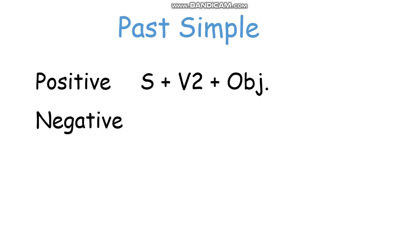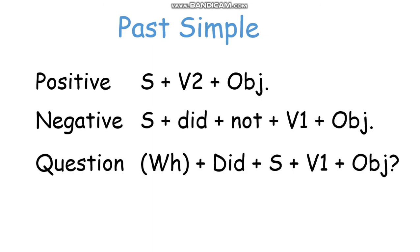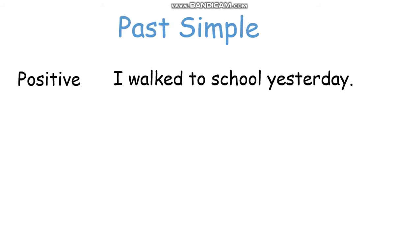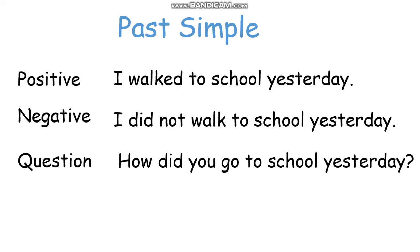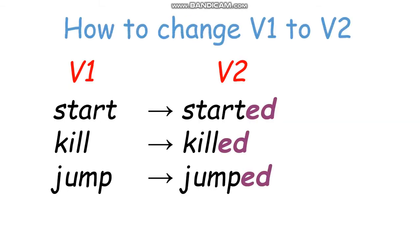So this is the form that I already told you. We have three: positive, negative, and question. Positive: subject plus verb two plus object. Negative: subject plus did plus not plus verb one plus object. So the example I already told you: 'I walked to school yesterday' — it means in the past. Negative: 'I did not walk to school yesterday.' And the question: 'How did you go to school yesterday?' So this is the form of past simple. Today I want to explain a little bit how to change the verb from verb one to verb two.